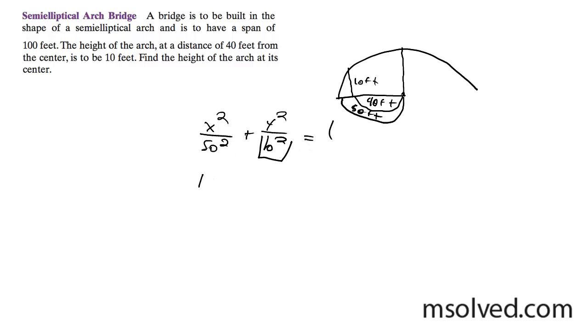So we were looking at the height at 40 feet - we know the height at 40 feet. 40 over 50 squared, and we know it's 10 feet, 10 squared here, b squared equal to 1, so 1 minus.